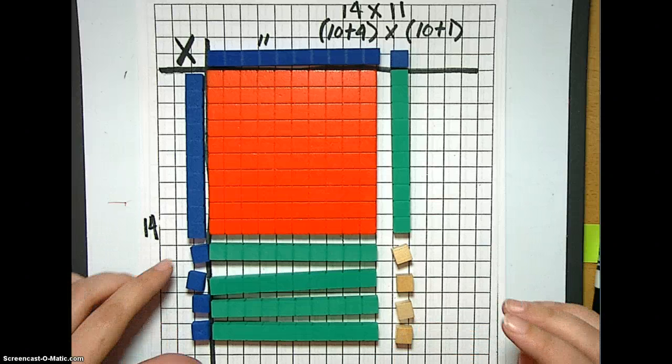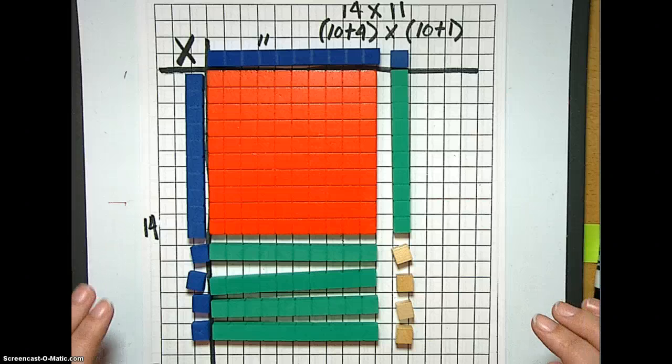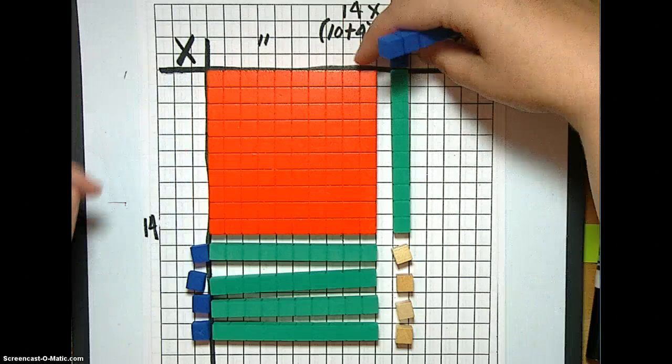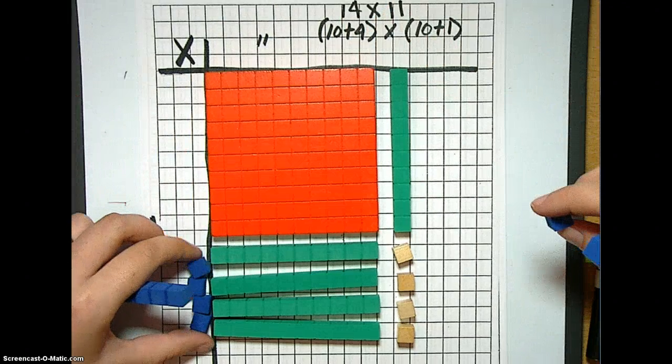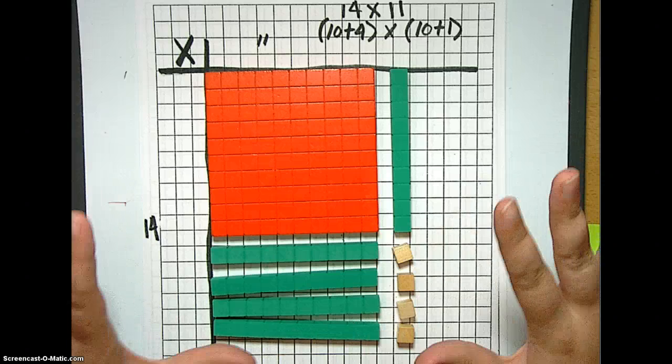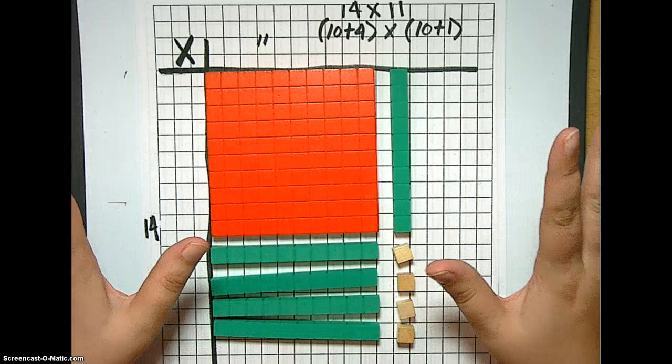So, if we take away our problem now, which you remember is 14 times 11. So, the blue blocks that I'm taking away was my problem. Taking away 14 times 11. You see magically, ooh, my answer.